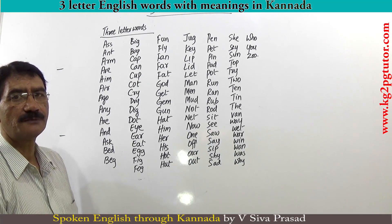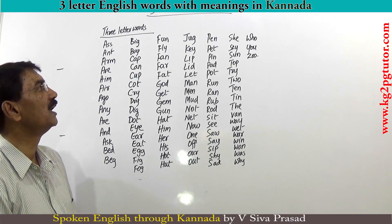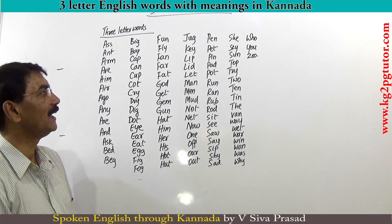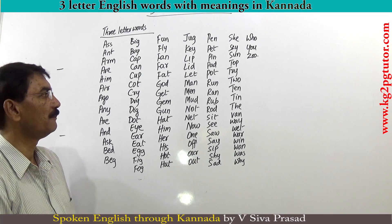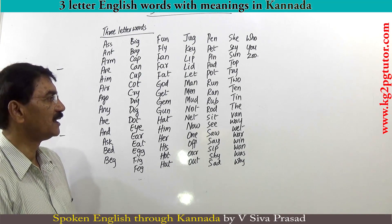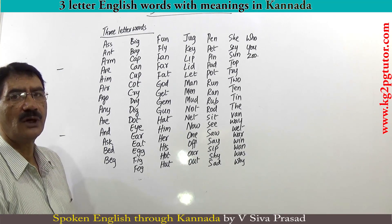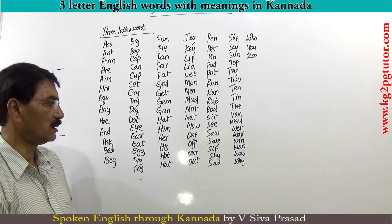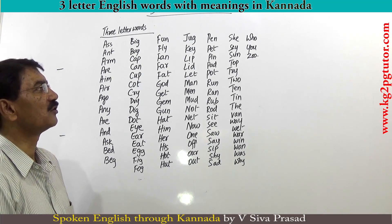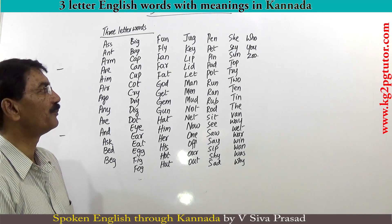HOT (gudsilu/hot), JEG (khuja), KEY (beegatkay/key), LIP (thuti/lip), LID (muchala/lid), LET (anumathisu/let), MAN (purish/man), MEN (purishuru/men), MUD (mannu/mud), NOT (illa/not), NET (bala/net), NOW (ega/now), ONE (ondu/one), OFF (arisu/off), OUR (namma/our), OUT (purrave/out), PEN (pen), PET (sakuprani/pet), PIN (guntsuji/pin), PAD (ratu/pad), POT (madukhe/pot).